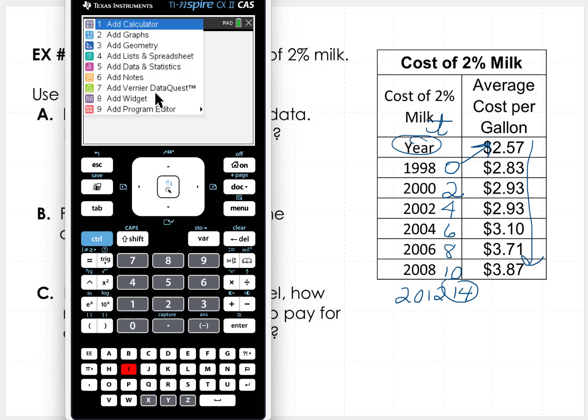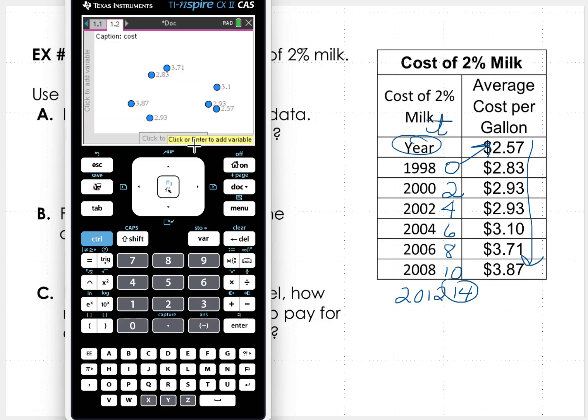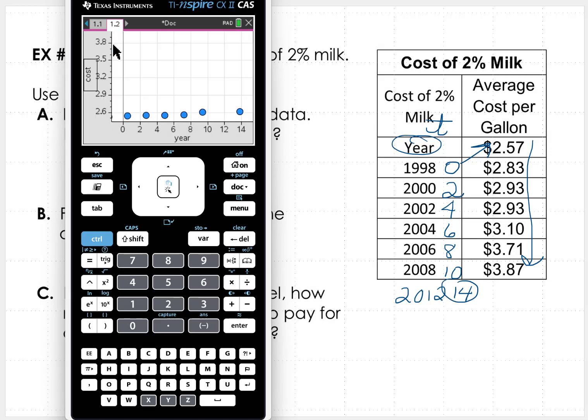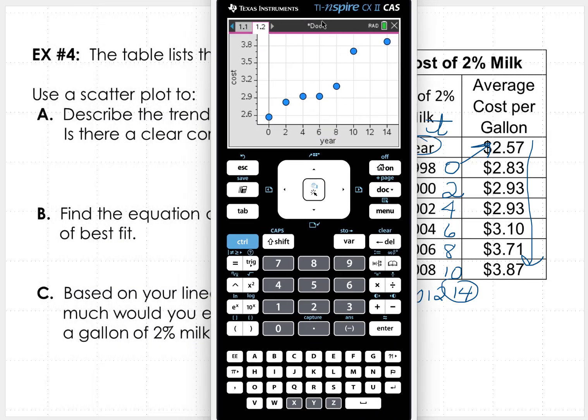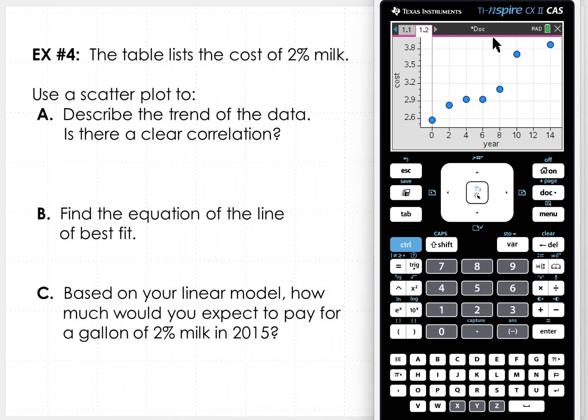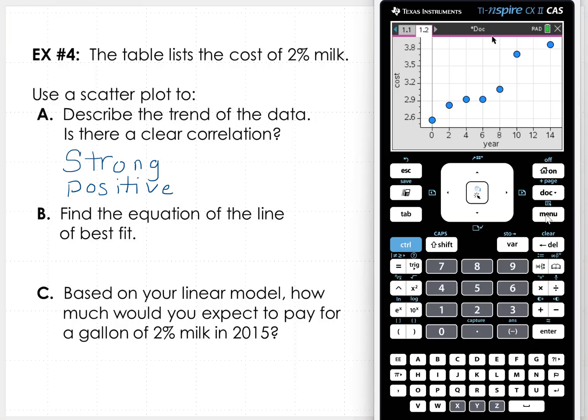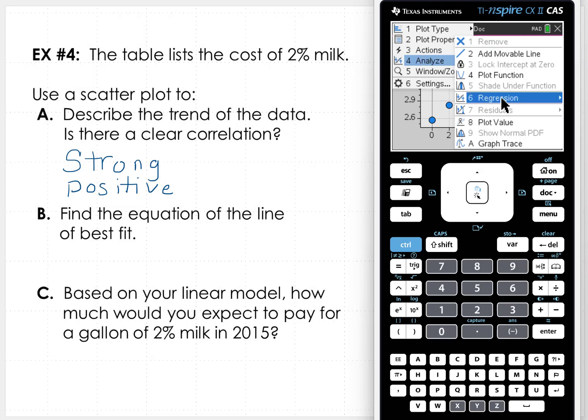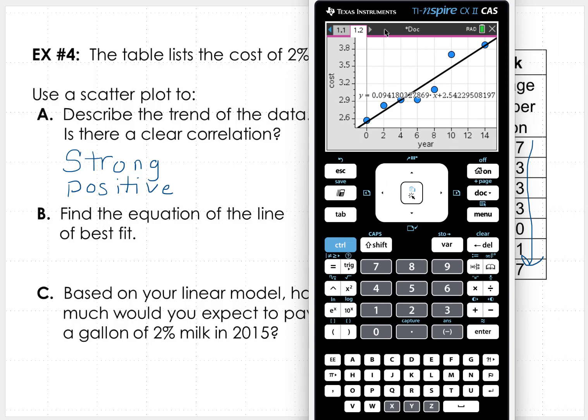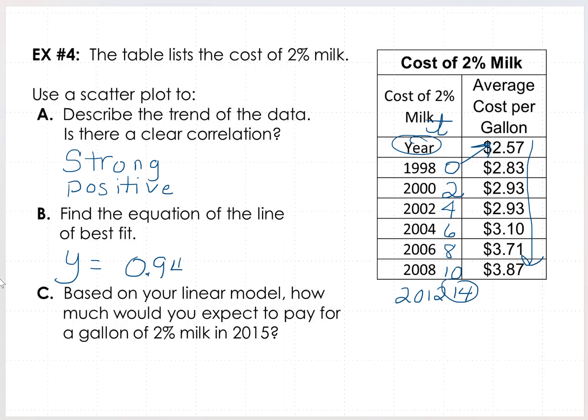So we want to insert, control I, the data. And we're looking for the year. And then we're looking for the cost. That looks like a strong positive correlation. So let's go over here and say this is strong positive. And then to find the equation of the line of best fit, that's going to be menu, analyze, regression, and slope intercept. So that looks like 0.0942x plus 2.542. So y is 0.942 times x plus 2.542.